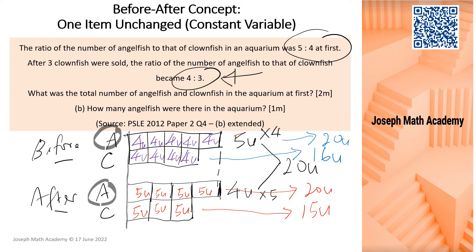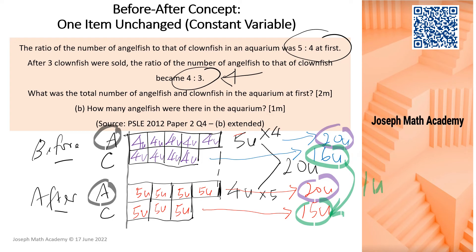From here we do a simple check: it's confirmed that angelfish is constant and unchanged. And for clownfish, there is a drop of 1 unit, and 1 unit equals 3, as stated in the question.